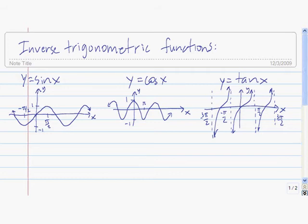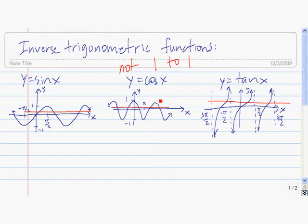In this video, I'm going to talk about the inverses of the sine, cosine, and tangent functions. Here are their graphs. What you first notice is that none of these functions are one-to-one. And what that means is that as they stand, none of these functions have an inverse that's a function. So what we need to do in order to define the inverse is restrict the domain of each of these to an interval for which it is one-to-one.